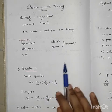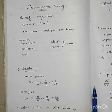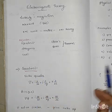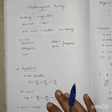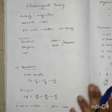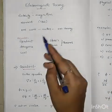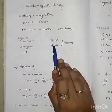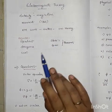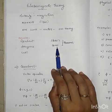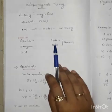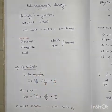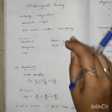We will discuss this chapter about operators in electromagnetic theory and Maxwell's electromagnetic equations. The basic topics are gradients, divergence, and curl — their physical significance, examples, Stokes theorem, and Gauss's theorem.